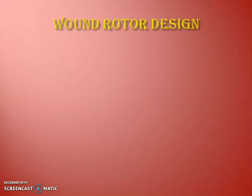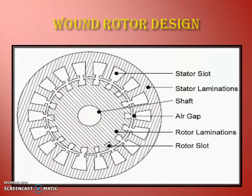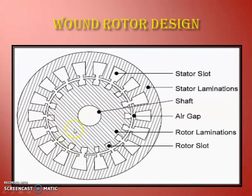Before we start the actual design process, let us see the basic construction of the rotor. As shown in the figure, we can see the stator slots and stator core. We are interested in designing the rotor. We have rotor slots and this part is known as rotor core. At the center we connect the shaft, which is known as the inner diameter of the rotor lamination. We have an air gap in between the stator and the rotor.